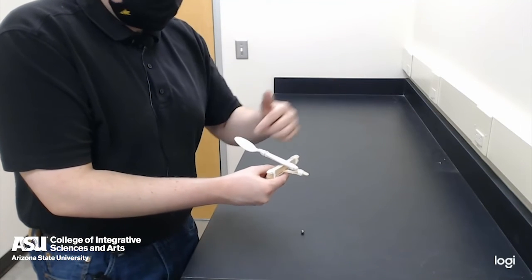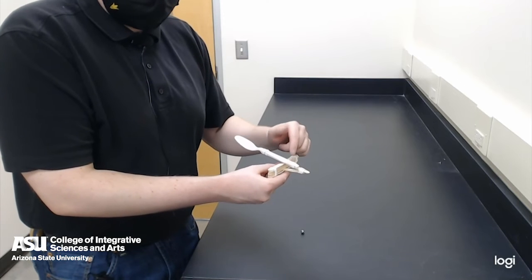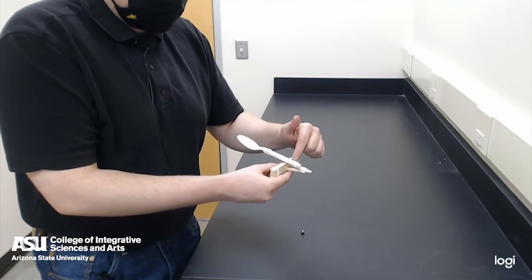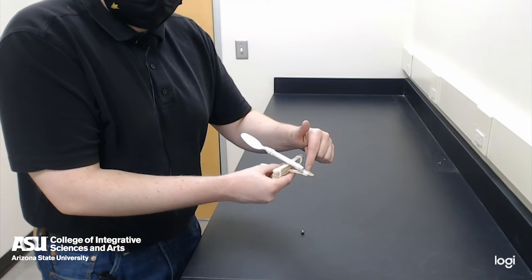If you want to get more distance, but a lower launch angle, then move the popsicle stick stack closer to the front here by the rubber band.